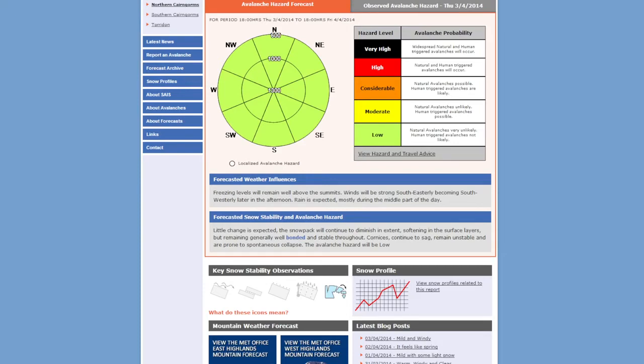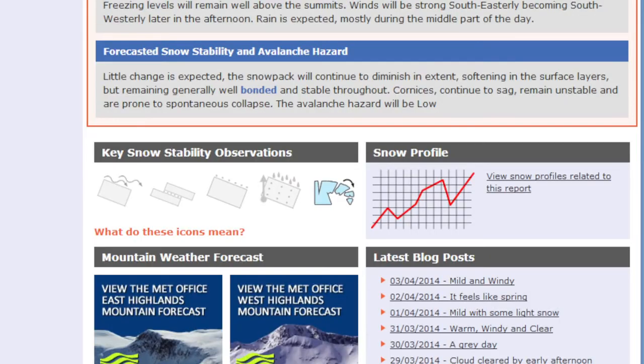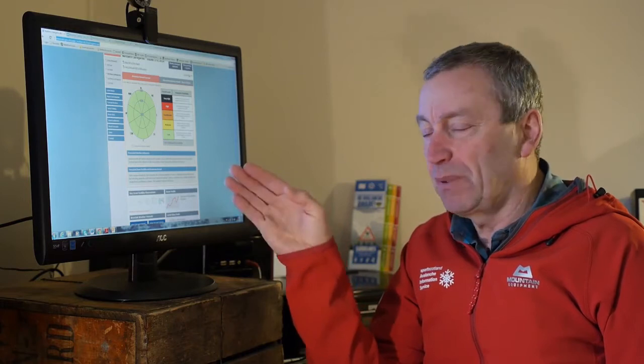Okay, well, what we've come to now is the current avalanche report. And as you can see, it's pretty much low on all aspects and at all levels. But really this is to illustrate the other information you can get in the avalanche report. The most obvious thing or the key thing that we have at the bottom is key snow stability observations. And these key snow stability observations pretty much identify the key hazard levels. So any hazard level that we have, any observation that we make in the mountains can be pretty much fitted into these symbols or into these icons.